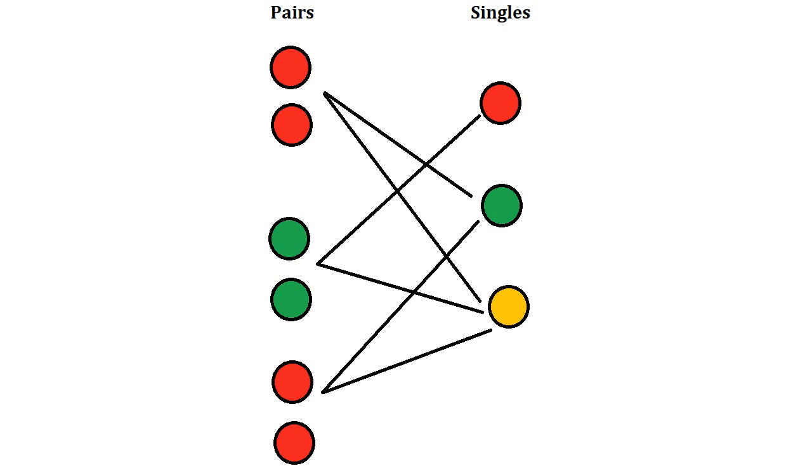Now we want to pair up the groups in a way that gives the largest amount of pairs. Let's start by drawing a line between all group pairings that make valid sandwiches. Remember, we want the middle color to be different from the top and bottom colors.